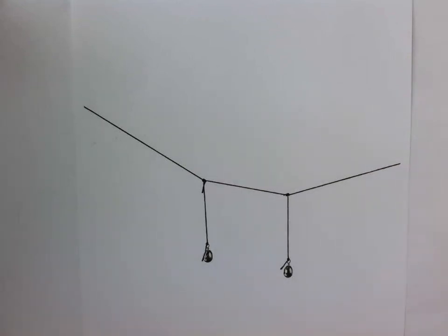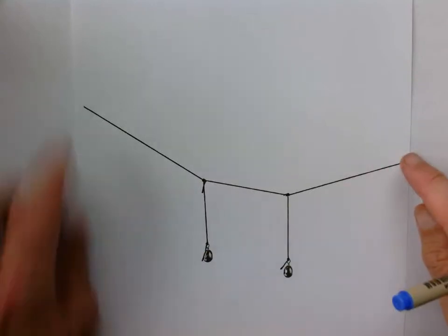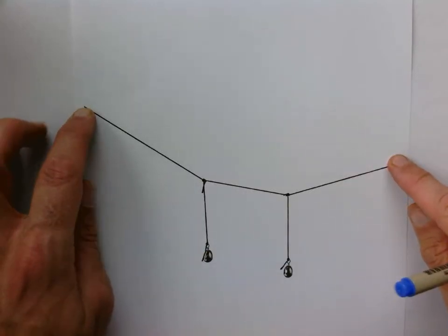Okay, so now let's try a slightly more complicated example. Now I have a string with two weights hanging on it. All I've done here is I hung these two fishing weights on this string, taped it to the wall, took a picture of it and printed it so that we could draw on it.